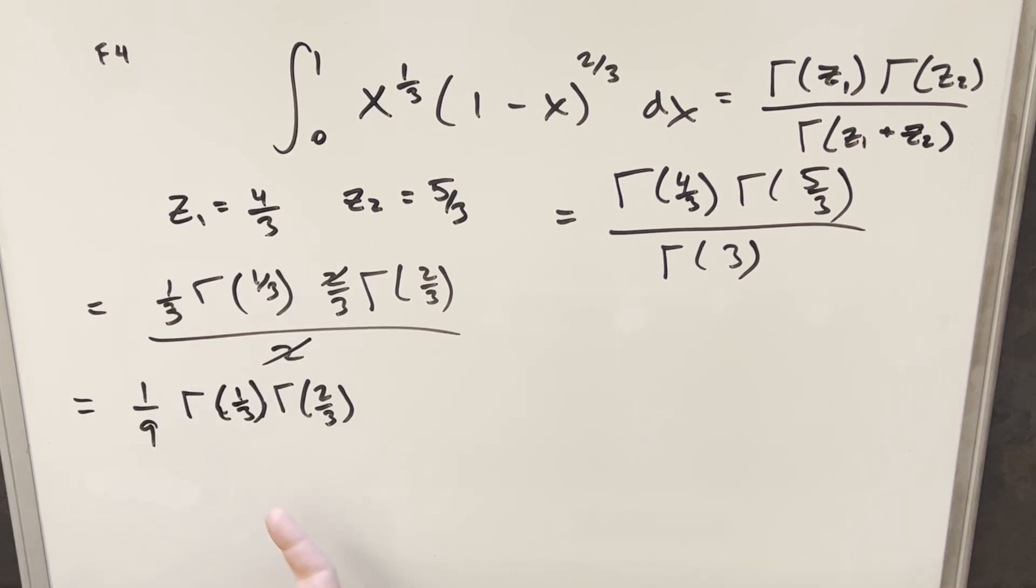And then at this point, we may seem to be stuck because we have this thing, and how do we calculate that? If these fractions were halves, like 1/2, 3/2, 5/2, then we could easily calculate those. But for 1/3, it's a little more tricky. For this situation, what we're going to need is Euler's reflection formula.